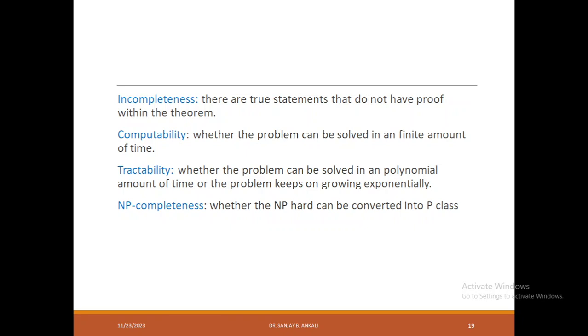The next term is computability. It says whether the problem can be solved in a finite amount of time. Next is tractability, which says whether the problem can be solved in a polynomial amount of time. If there is a problem and you have an algorithm, that problem has to be solved very quickly. Order of growth should be either log n, n, n square, worst case n cube. It should not go beyond that. We should not have algorithms with order of growth as 2 to the power n or n factorial.